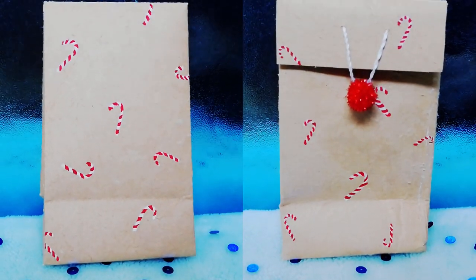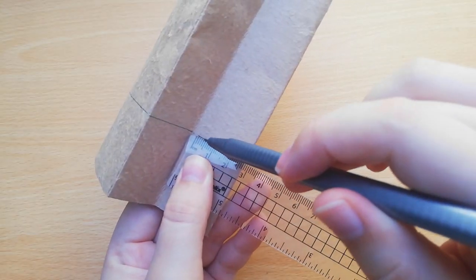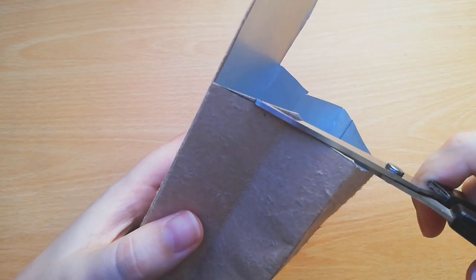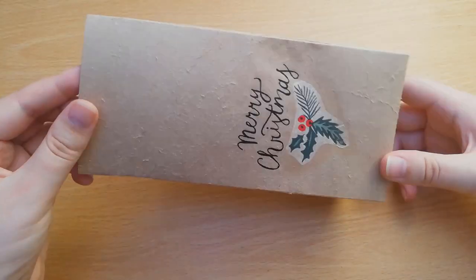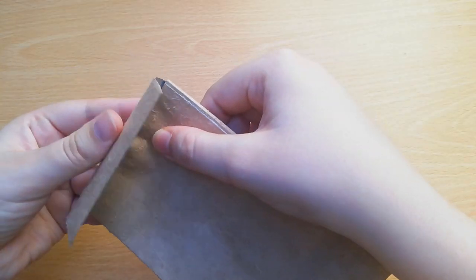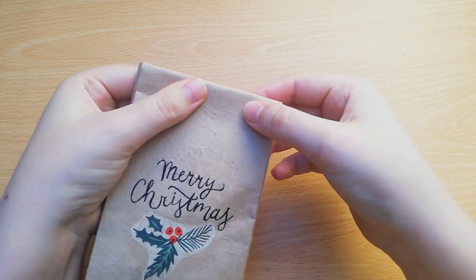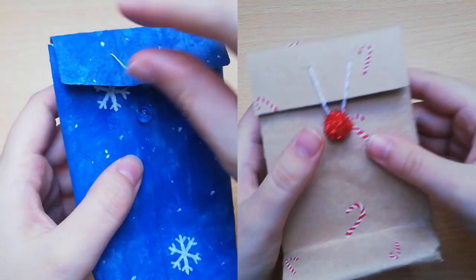Another idea is to create a flap by cutting the back and the sides shorter and folding it to the back. You can leave it like that or attach a bead and a string as a closure.